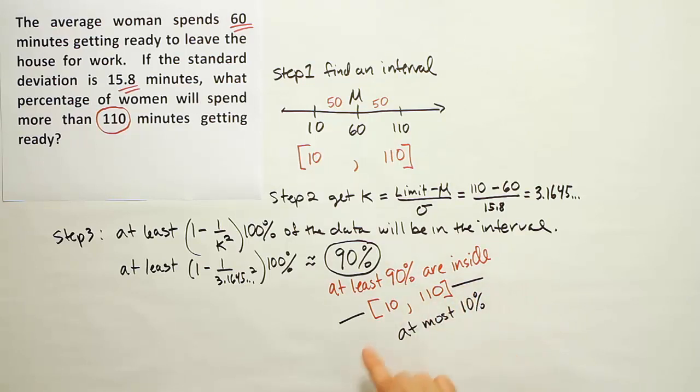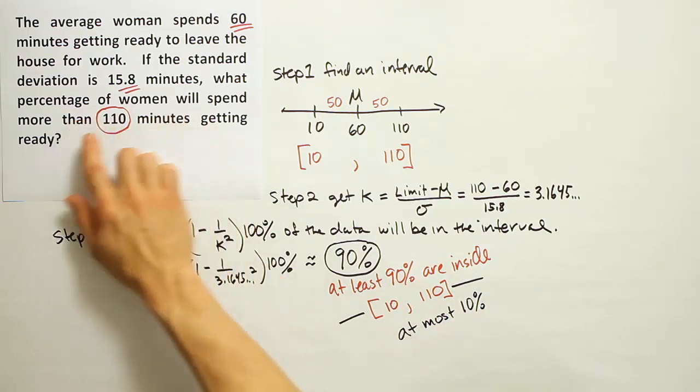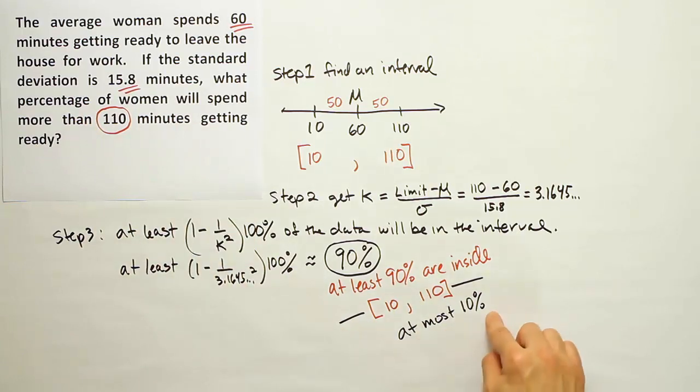Chebyshev's theorem has no assumption about symmetry. There's no reason to believe that even if there was 10% outside the interval, it's split 5% and 5% on the two sides. It could all be on one side, part on each side - there's no guarantee it's split evenly among the two ends. Our answer then is that if I want to know the percentage of women who spend more than 110 minutes, it's at most 10%. It can't be any more than that because we know this interval contains at least 90%.